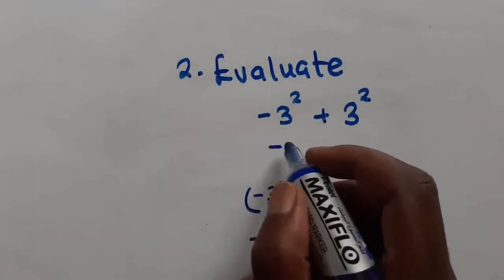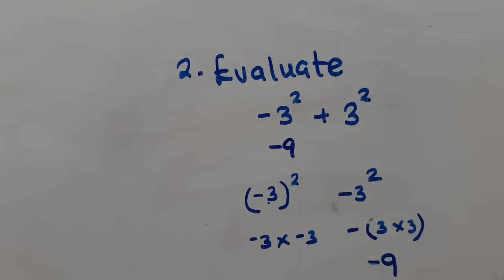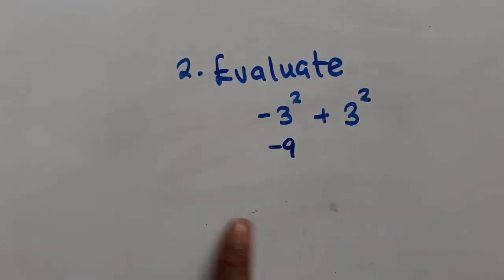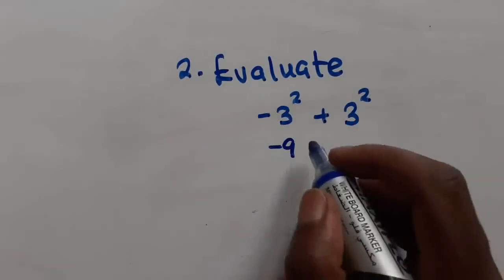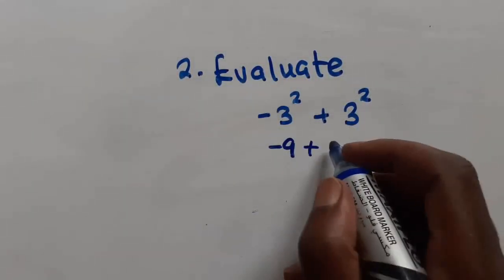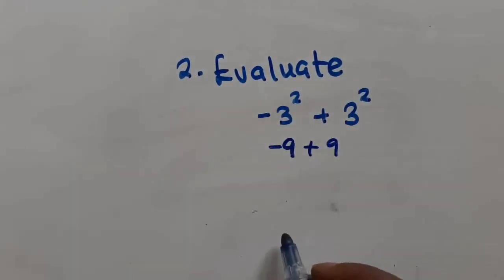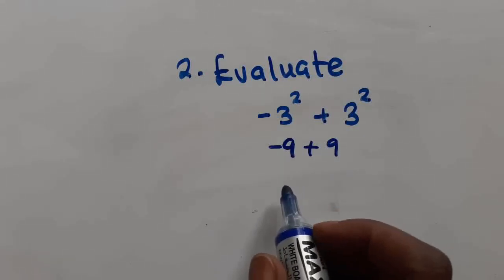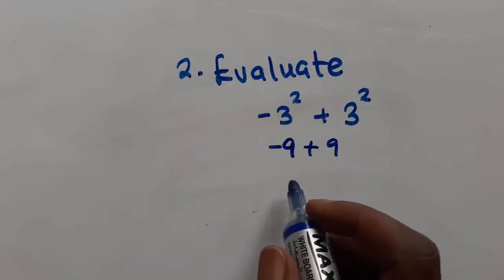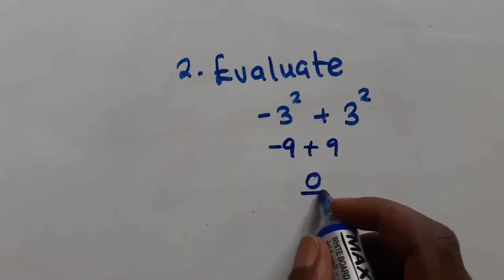So here, we're going to have negative 9. We're going to get negative 9 minus... This side, when we... this is going to give us 9. So these are opposites here. These are opposites. So what are we going to get? We're going to get 0.